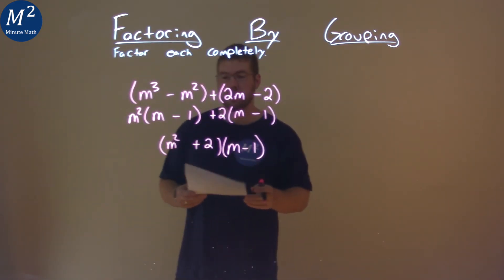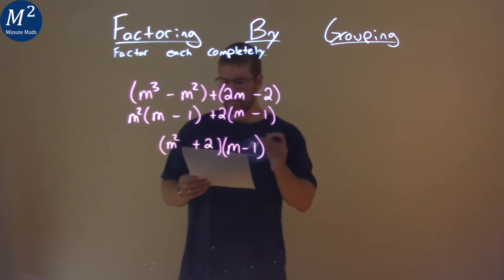And now we have our final answer, m squared plus 2 times m minus 1.